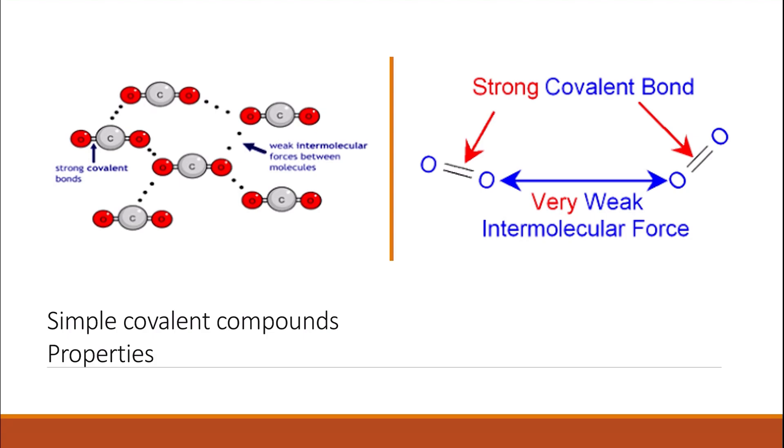These molecules are called simple molecules or simple covalent molecules. Unlike ionic molecules or the ionic structure, they don't have ions or electrons to move freely, so they don't conduct electricity. They have strong covalent bonds between the atoms of the molecules.